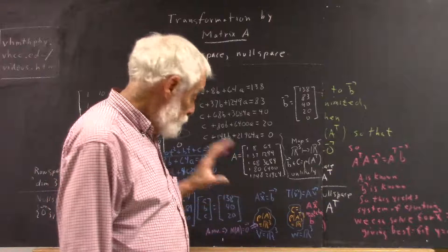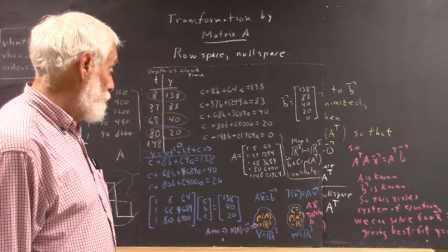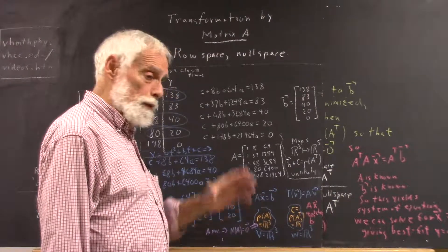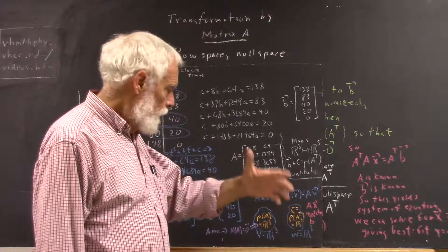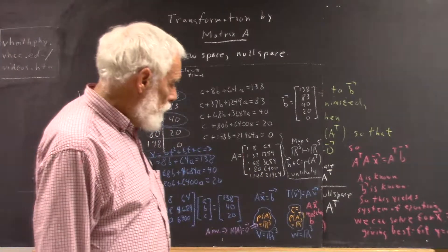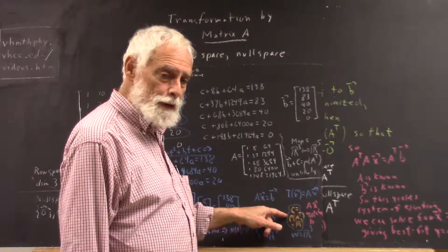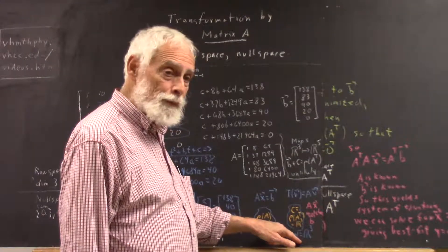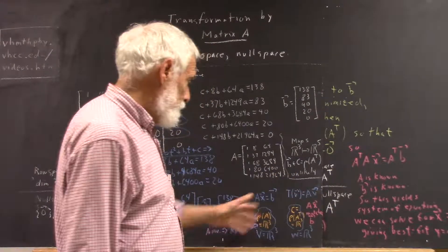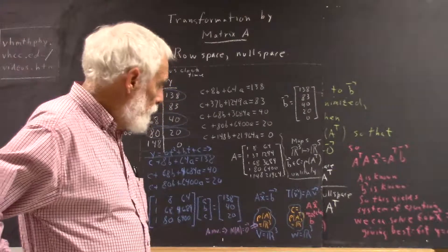In general, we have to project b onto a subspace of r3 and projecting it parallel to the null space of a transpose. Now, you might not remember all those details, but that's what we do. In this case, though...